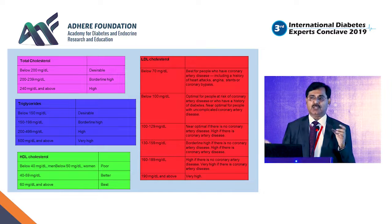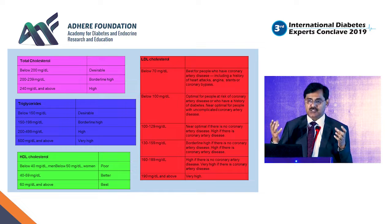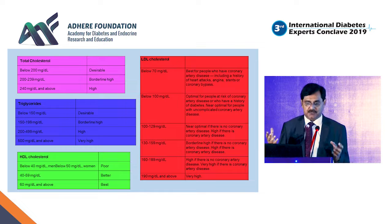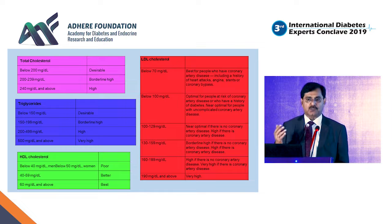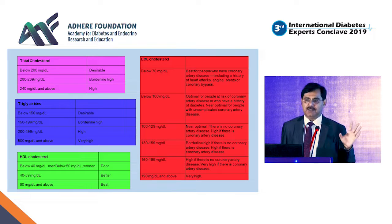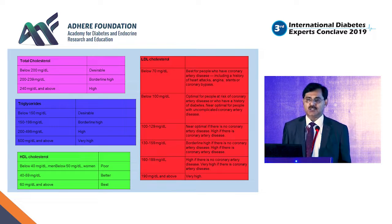HDL works in the opposite direction — high HDL is protective. There are different values for males and females: 40 and 50 respectively, and those are the targets to aim for.